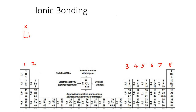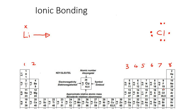Let's draw chlorine: it's in group seven, so it has seven valence electrons. Now, what we learned earlier is that this lithium atom is going to lose its one valence electron. So we're going to convert it into a lithium ion that is now positively charged, showing that it gave away this electron.